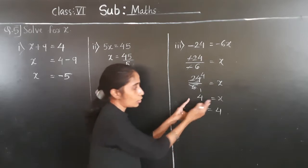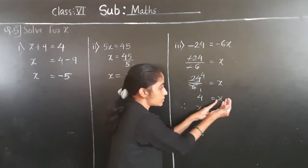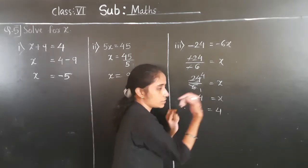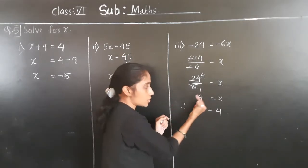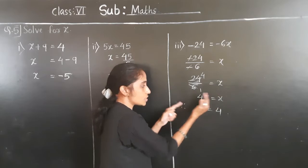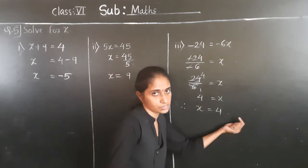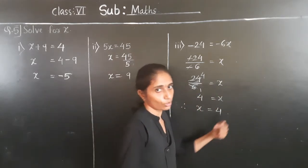Keep x as it is — don't touch the variable. Variable stays as it is. So x is equal to 4. Therefore x is equal to 4.